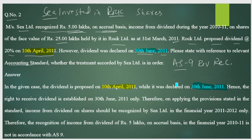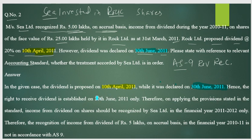Proposed means estimated — an estimation of how much dividend will be paid. But declared means your right as a shareholder to receive that amount is established. Hence, the right to receive dividend is established on 30th June only, which is the declared date.